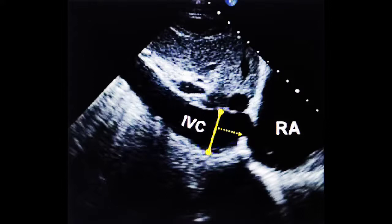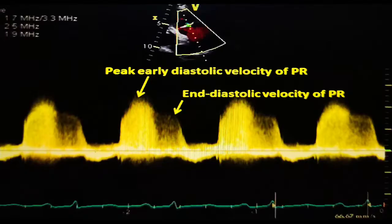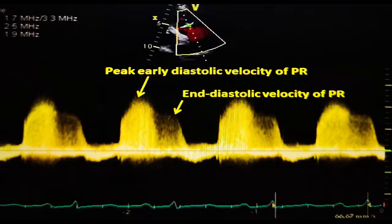Pulmonary arterial pressure can also be measured from the PR spectrum. The peak early diastolic velocity of PR, added to right atrial pressure, gives mean pulmonary arterial pressure. The end-diastolic velocity of PR gives pulmonary end-diastolic pressure. Using these formulas from the PR signal, mean pulmonary arterial pressure can be calculated.